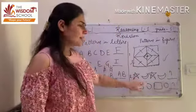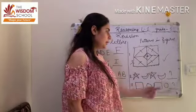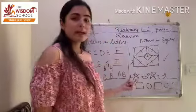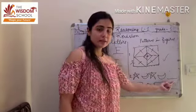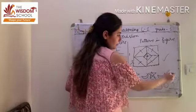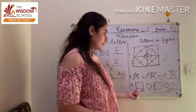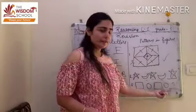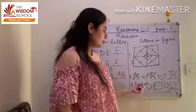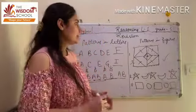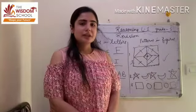Here we can easily identify the pattern: star, moon, star, moon — then what comes next? Star again, moon again. In the next example: square, circle, square, circle — then what comes? Square. So these are the examples of patterns in figures and patterns in letters. Please go through this chapter once again. That's all for today's class, thank you for watching.